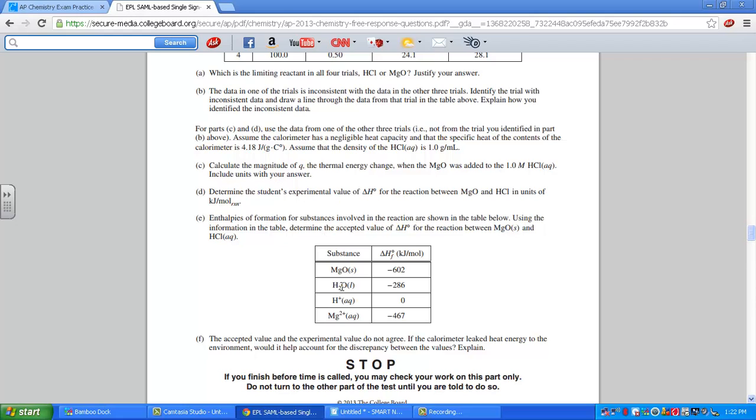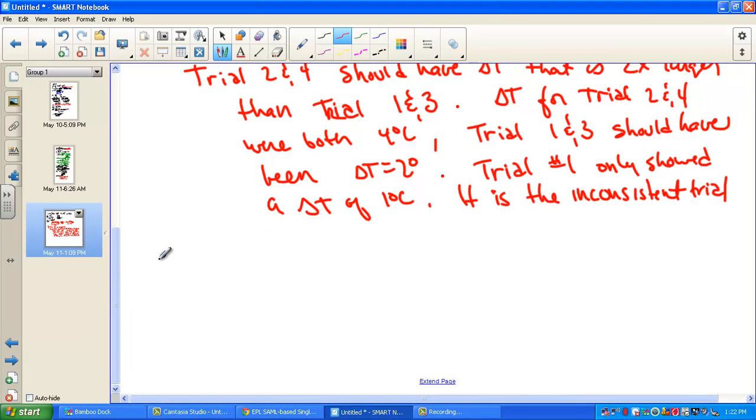So we were able to determine trial 1 was the outlier. It only had 1 degree temperature change compared to trial 3's 2 degrees. However, it is consistent with the delta T. By doubling the mass, we should have doubled the delta T. Let's go on and read parts C and D. We have to use the delta T's from one of the other trials. We have to toss out trial 1. Assume that the calorimeter has negligible heat capacity and specific heat of the contents. We'll use 4.18 joules per gram Celsius for the specific heat of water. We want to calculate Q, the heat, the thermal energy change when the magnesium oxide was added to the 1 molar HCl.